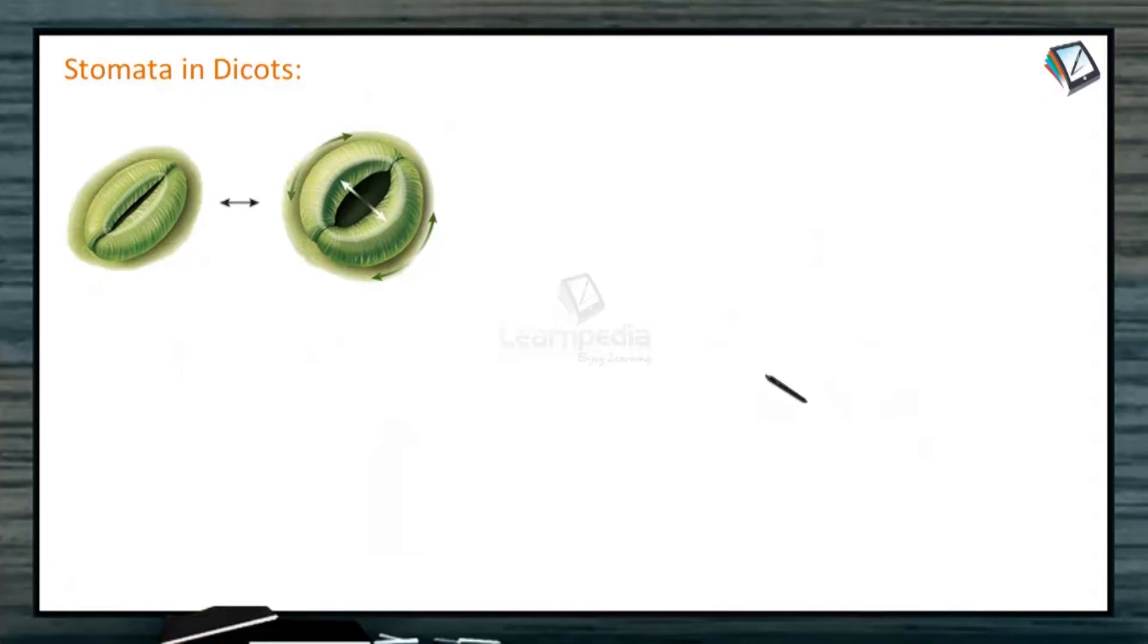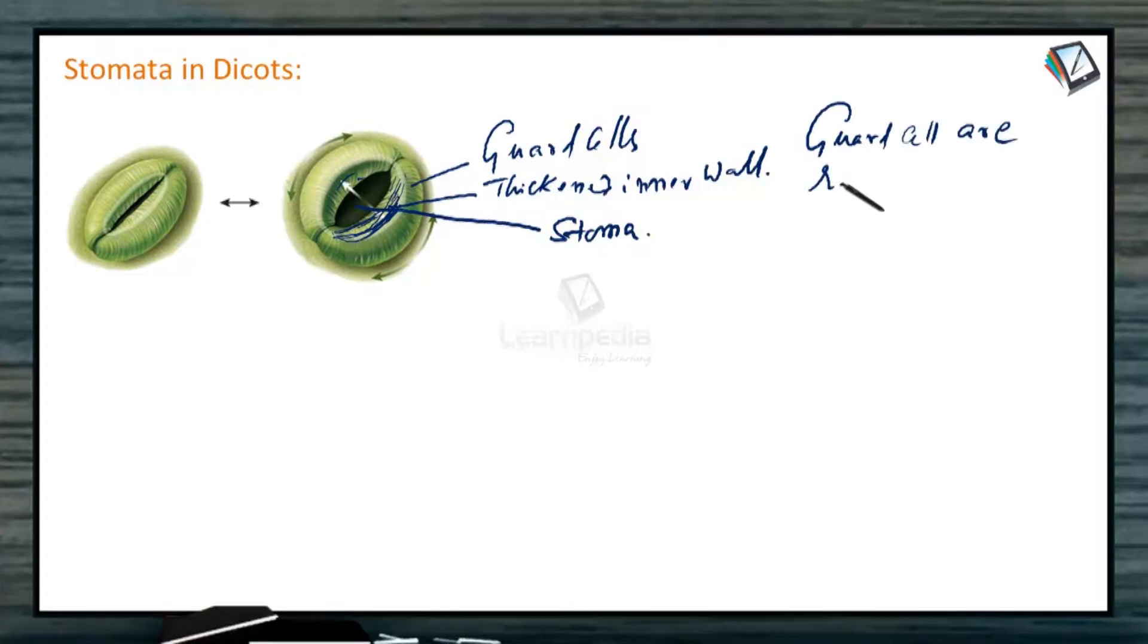Look at this image. These are the stomata in dicots. These are the guard cells. Here, see the wall. This is thickened inner wall. And this is stoma. And here, the guard cells are reniform, means kidney shape. This is the structure in dicots.